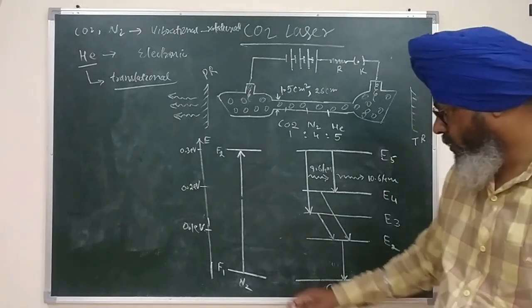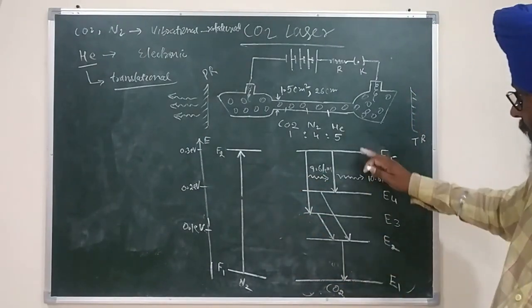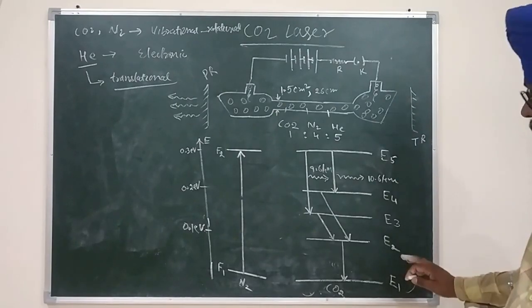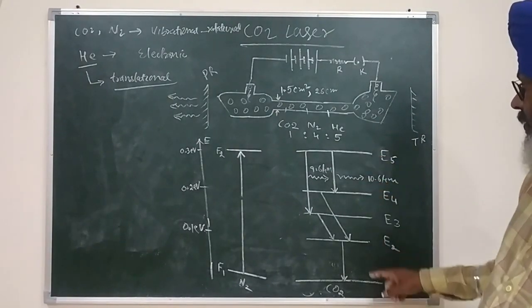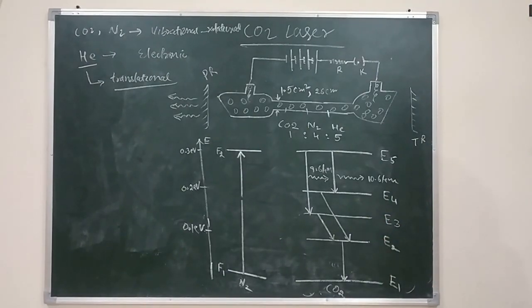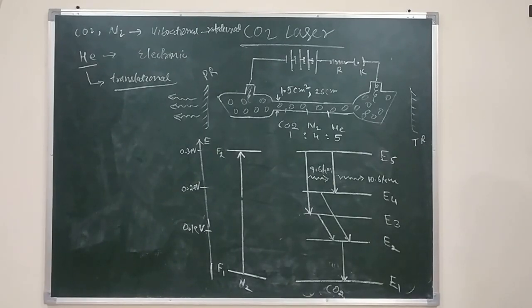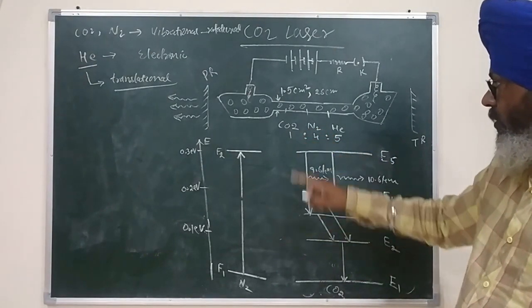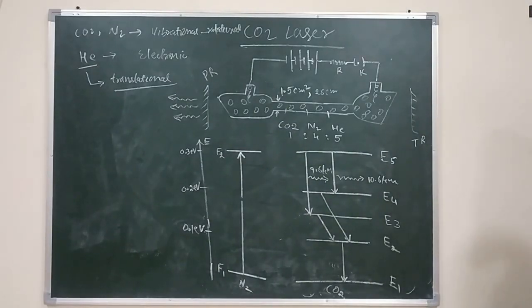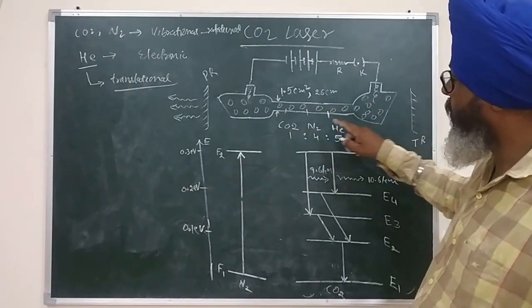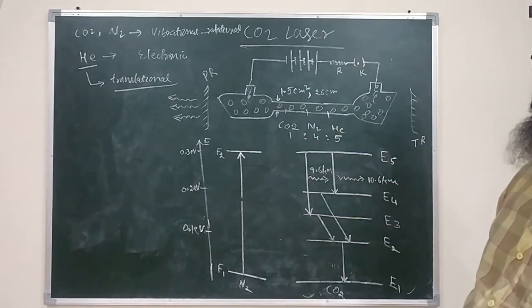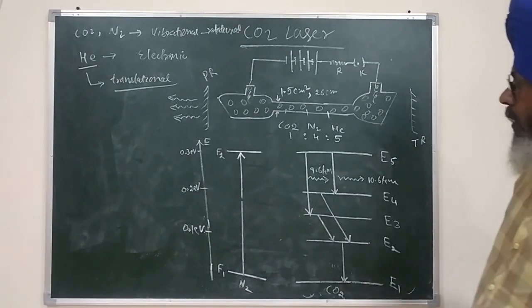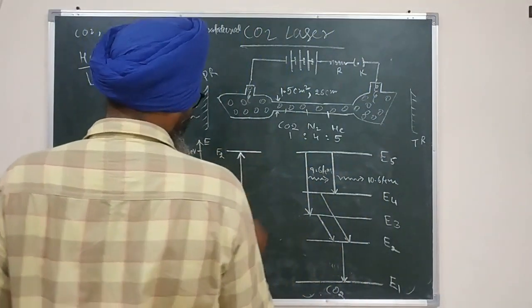This is the energy level diagram. The two levels shown are for nitrogen and the five energy levels are for the CO2 molecule. Remember, these levels are vibrational-rotational levels. We are using electrical discharge for pumping the gases. Because nitrogen molecules are four times more concentrated than CO2 molecules, electrons traveling from cathode to anode are more likely to collide with nitrogen molecules.